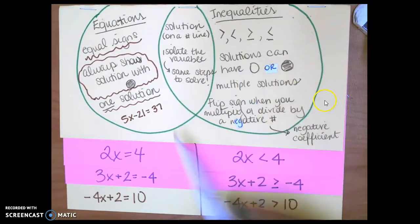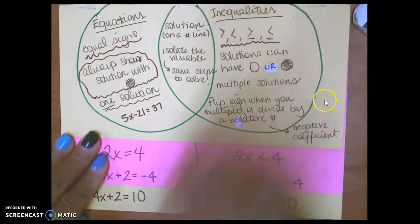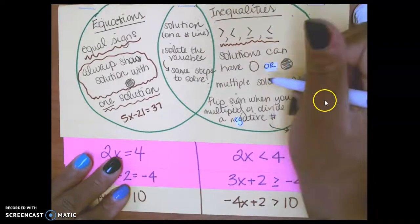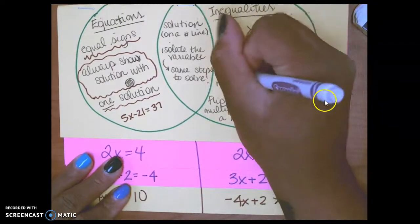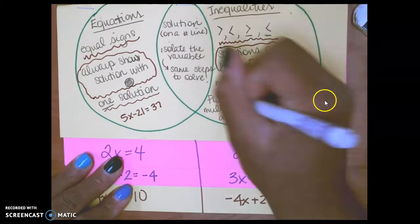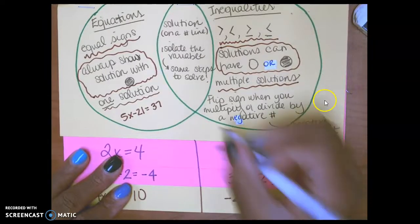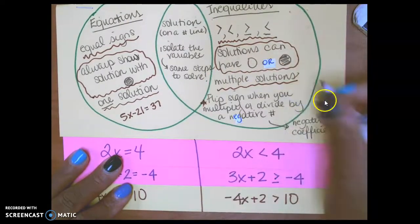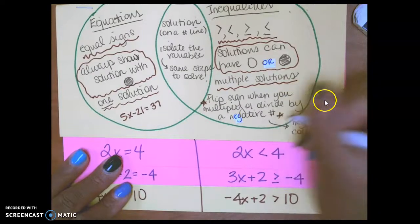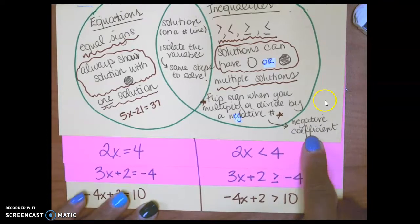Then over here we have inequalities use the greater than, less than sign, and greater than or equal to sign. And then the solutions have an open circle or a closed circle. There are multiple solutions, meaning there's more than one, and then we also flip your sign when you're multiplying or dividing by a negative number. Usually that's when your coefficient is negative.